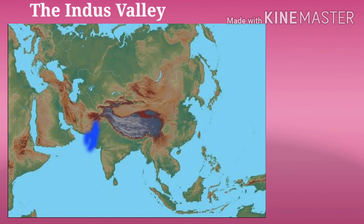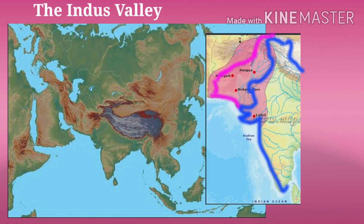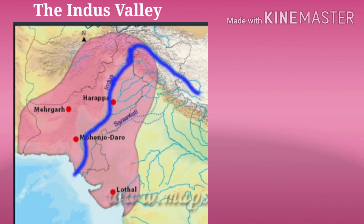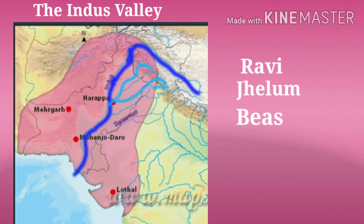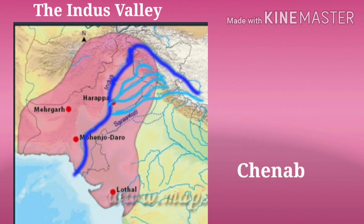The second one is the valley of Indus, that lies in India and Pakistan. It is formed by the river Indus and its five tributaries: Ravi, Jhelum, Beas, Sutlej and Chenab. This valley covers a large area in Pakistan and India.